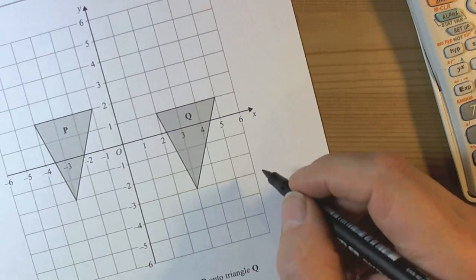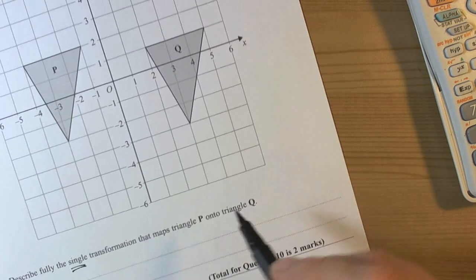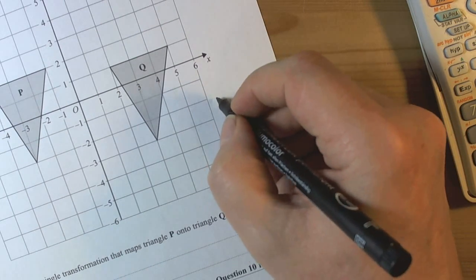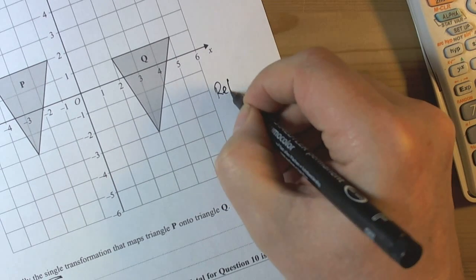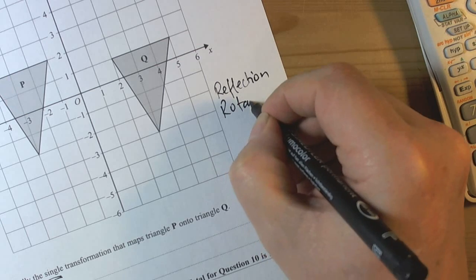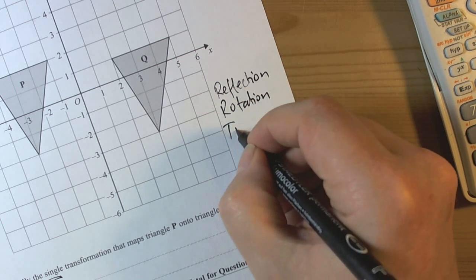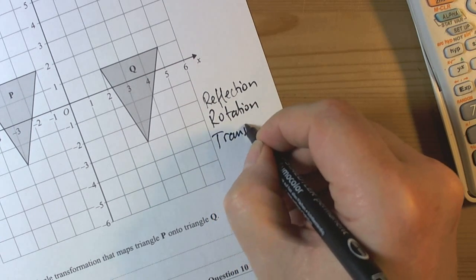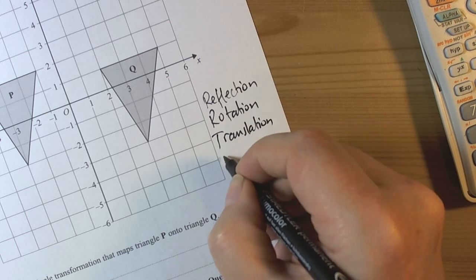My advice, always when you're doing these kind of questions, when it says describe fully the single transformation, write down the four possible transformations. So we have reflection, rotation, translation, and enlargement.